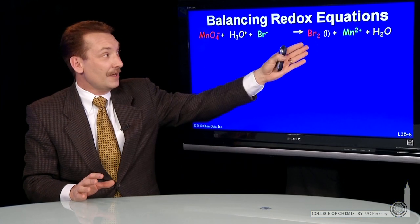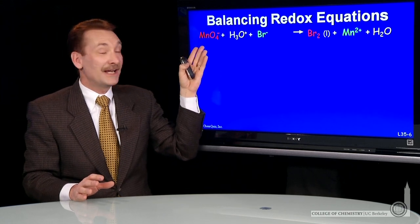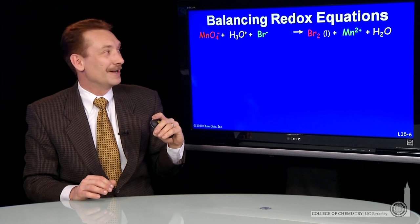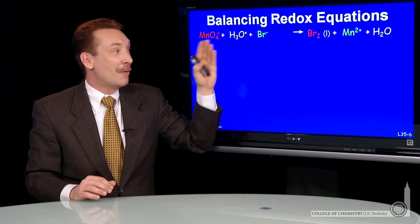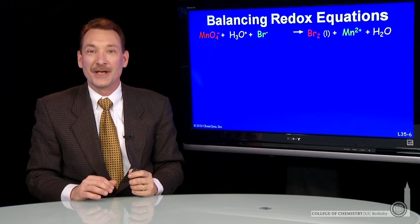This is obviously unbalanced. But what's happening? The permanganate is being reduced to the manganese ion and the bromide ion is being oxidized to the liquid bromine.